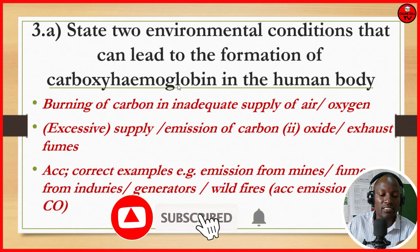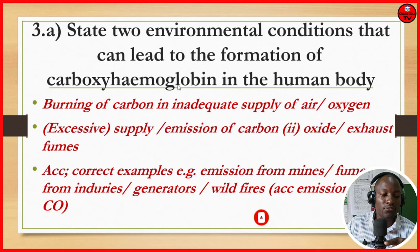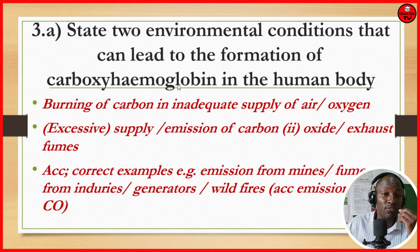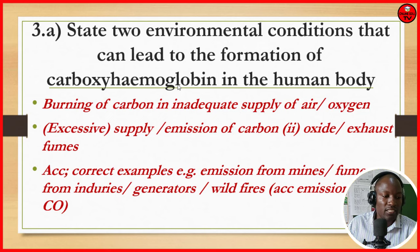We also accept correct examples such as emissions from mines, where there's a lot of production of carbon monoxide. Fumes from industries, generators, and wildfires also produce carbon monoxide. We also accept marking emissions of CO — that is the scientific symbol for carbon monoxide.